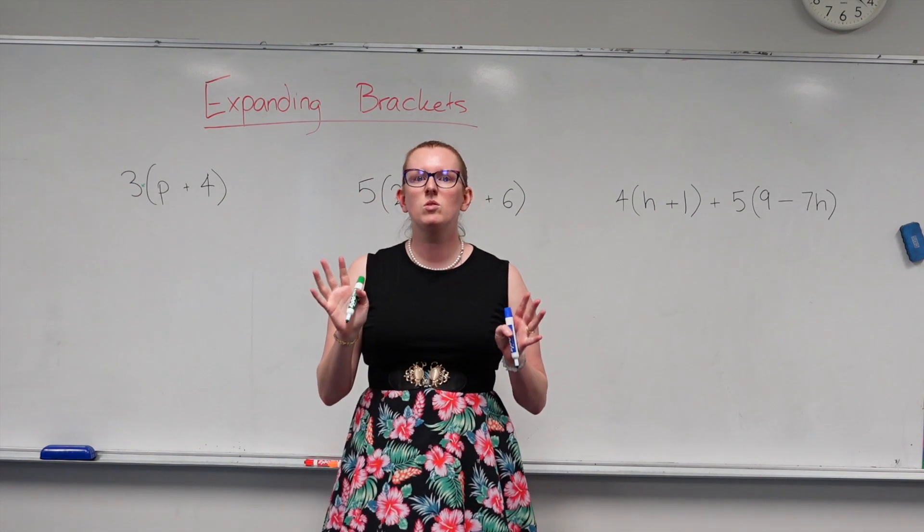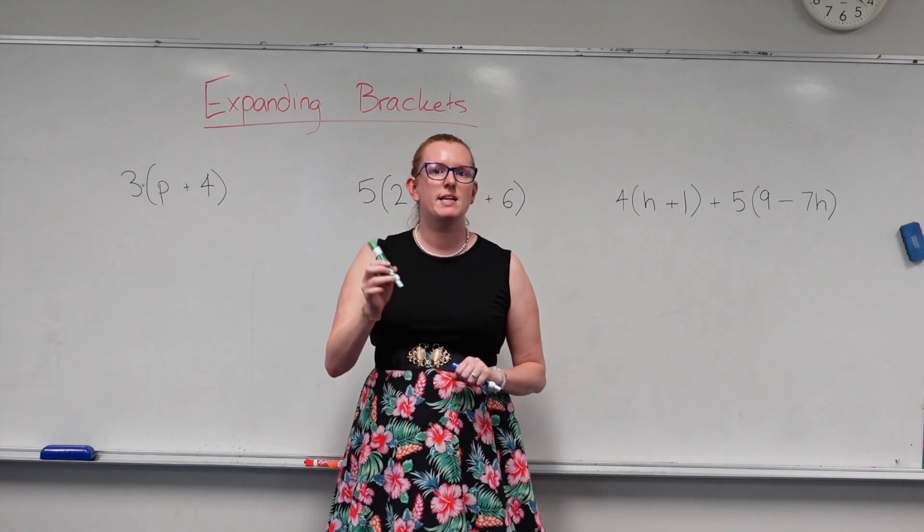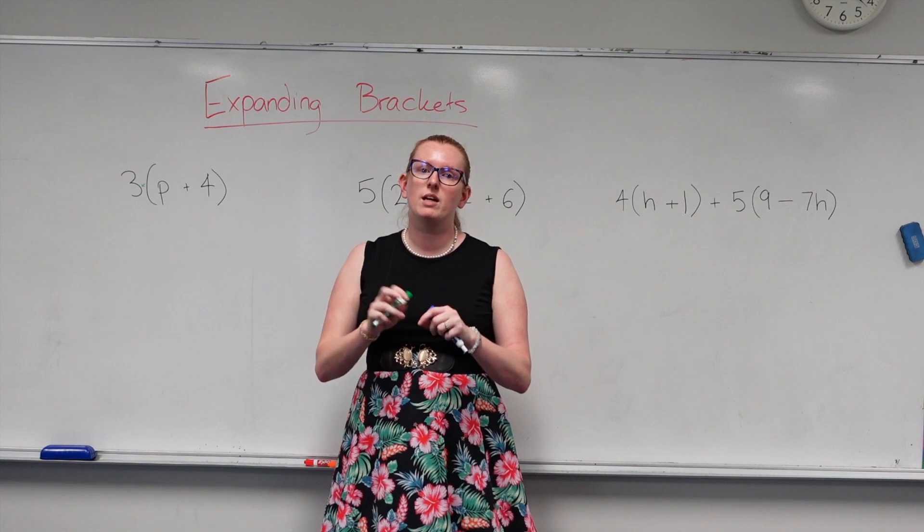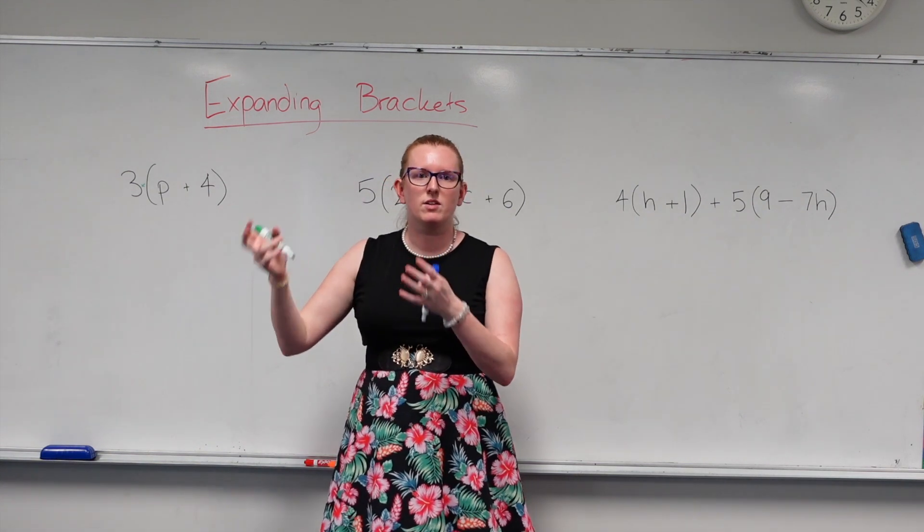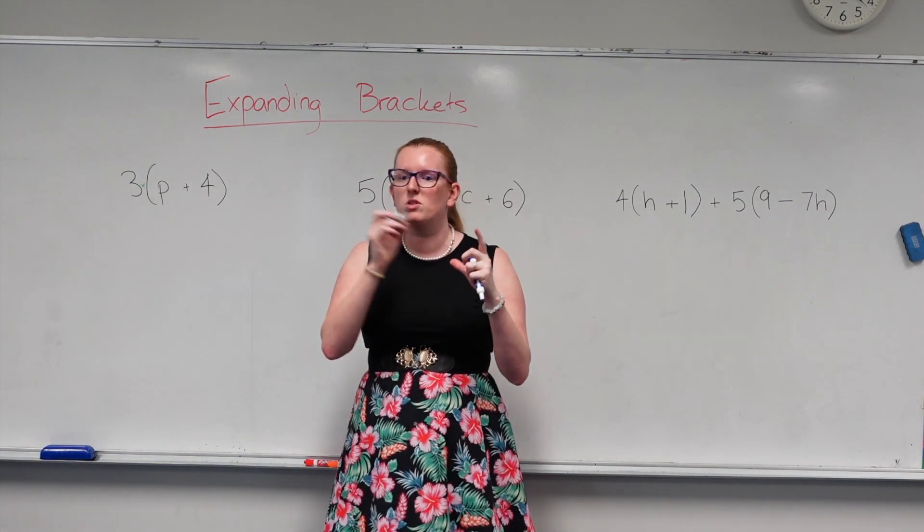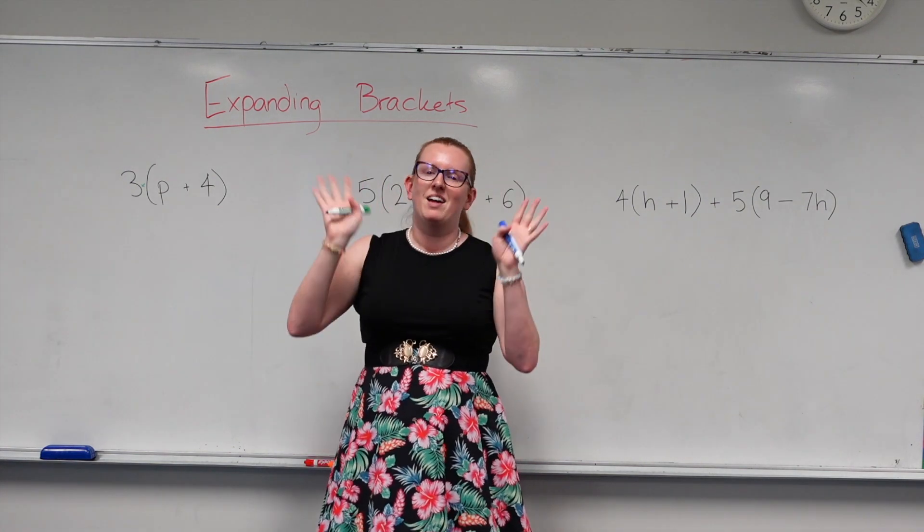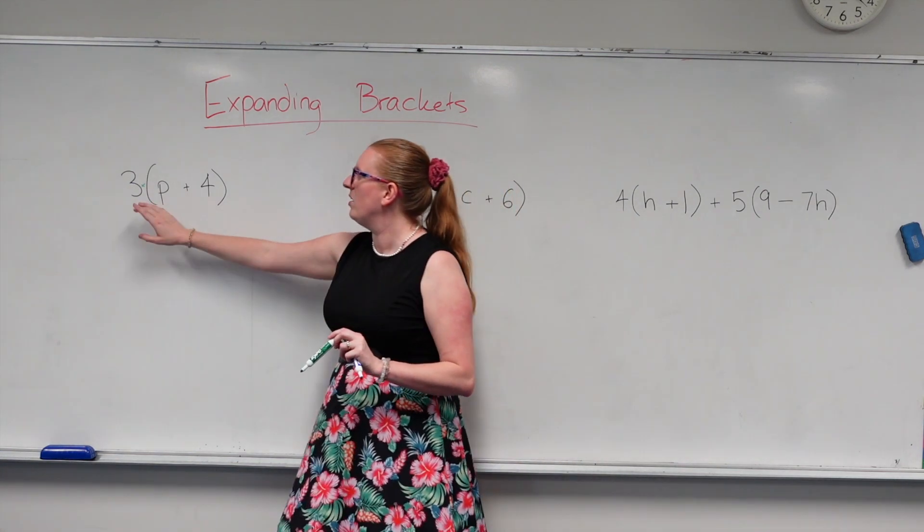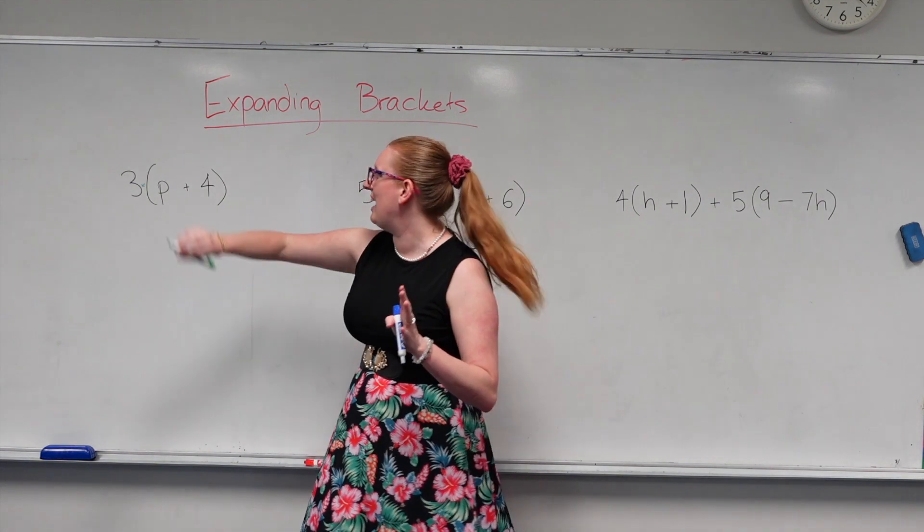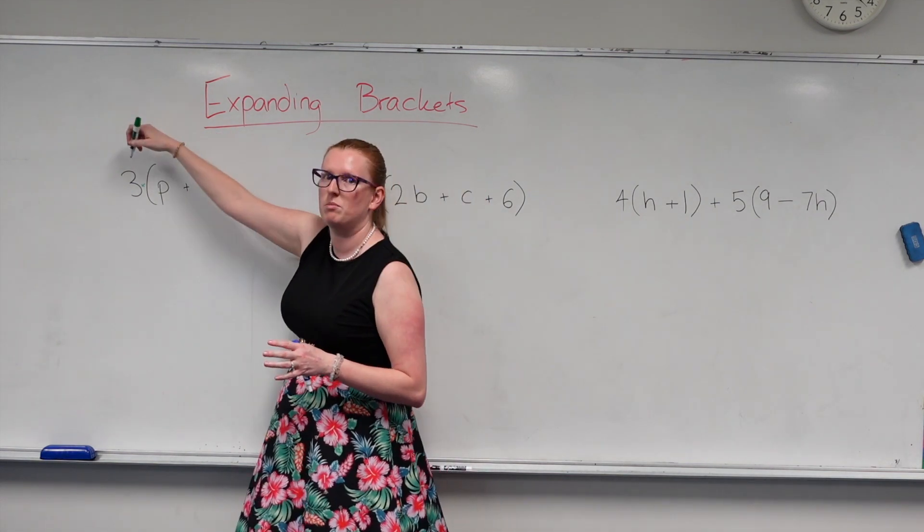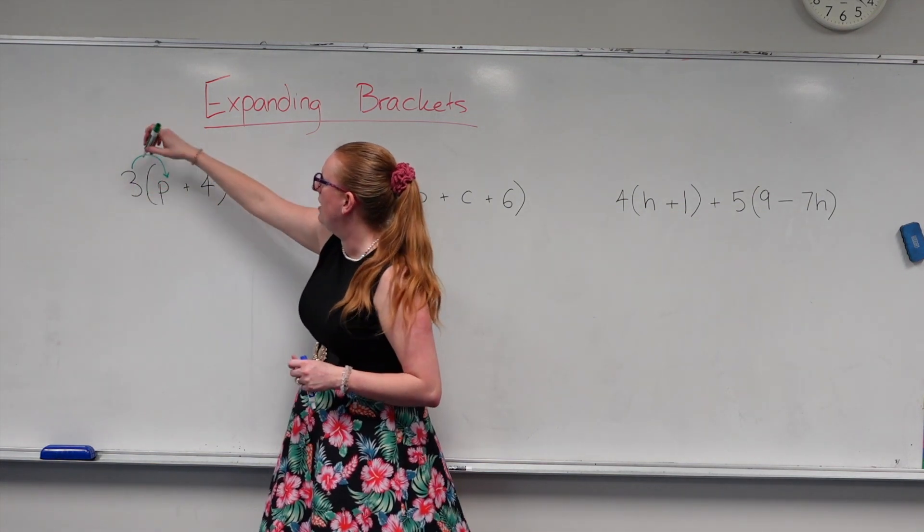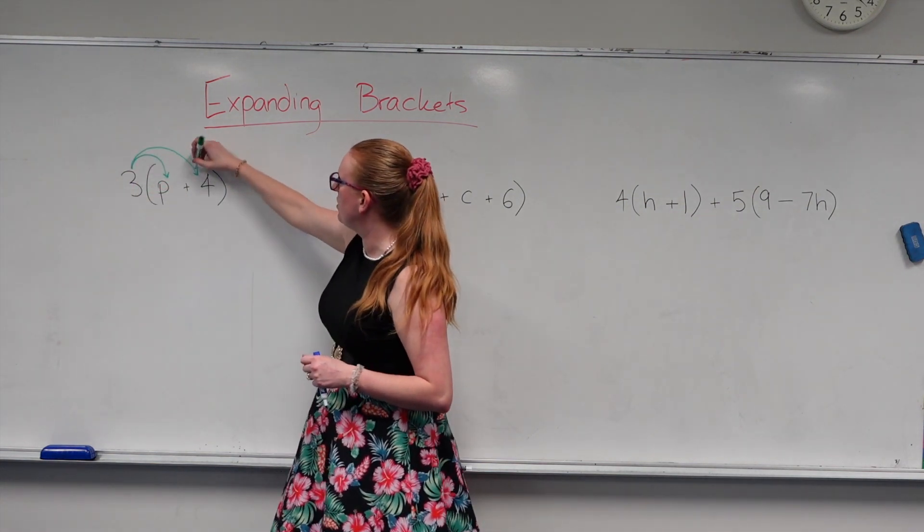So I always, always draw arrows. It saves me from forgetting any component. And this will be particularly important when you get into year 10 and year 11, where you have sets of brackets up against each other and you're having to multiply multiple components. Don't worry about that now. Let's just focus on if we have a number smooshed up against the brackets, we're going to be multiplying everything in here by the number in front. So this 3 is being multiplied by the p and then this 3 is multiplying with the 4 as well.